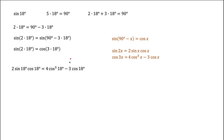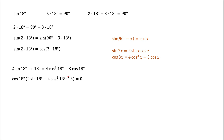After substituting, notice that all three terms on both sides contain cosine of 18 degrees. We move the right-hand side to the left-hand side and then factor cosine of 18 degrees out from all three terms, giving us an expression equal to zero.